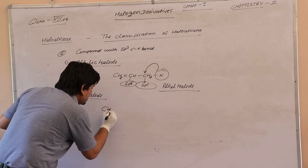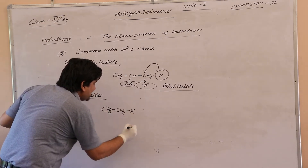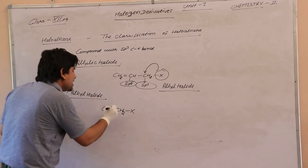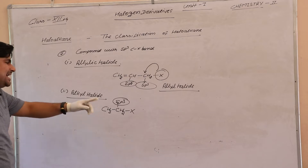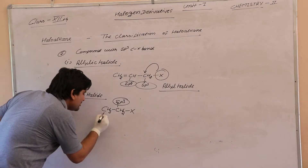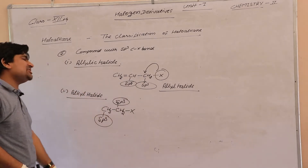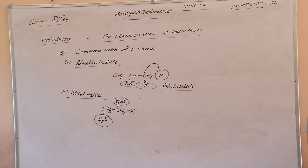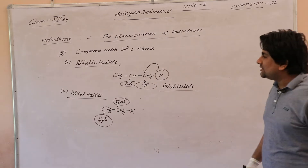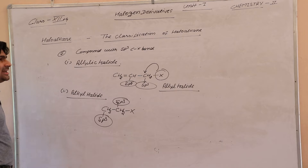CH3, CH2, then X. This carbon is SP3 hybridized and it is also SP3 hybridized. So we can say the halogen atom is directly attached with the SP3 hybridized carbon atom. The compound is called alkyl halide.